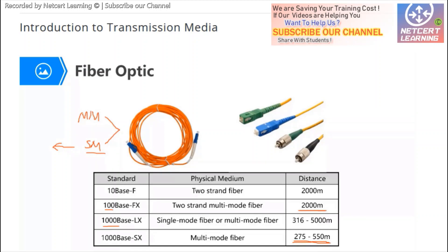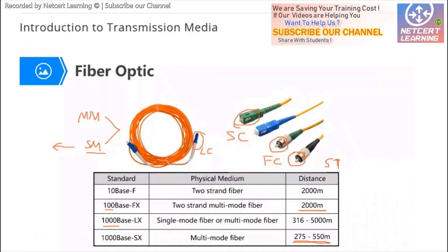For optical fiber connectors, there are many types. The SC connector is a big square connector. The LC connector is a small square connector. There are also FC connectors and ST connectors.